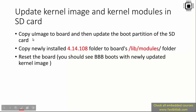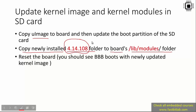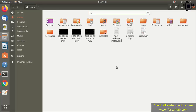To update the SD card, first copy uImage to the board's boot partition. Take out your SD card, connect it to the PC, and copy your image to the boot partition. Then copy the newly installed 4.14.108 folder to the board's /lib/modules folder. That is the root filesystem's lib/modules path. Then remove the SD card, connect it to the BeagleBone, and boot again. You should see BeagleBone boot with the newly updated kernel image. Let me connect the SD card.